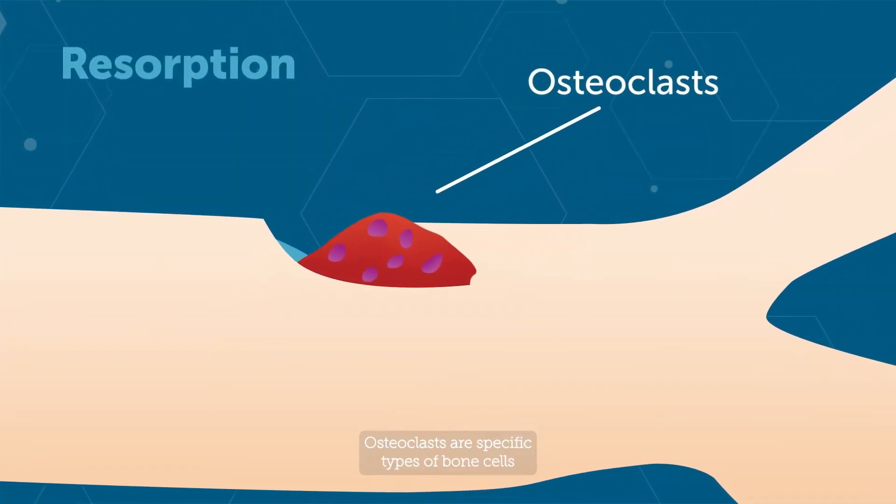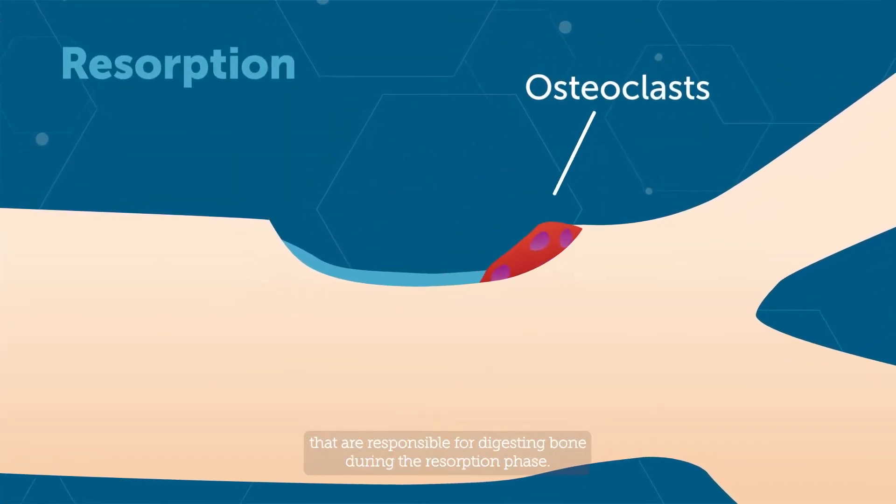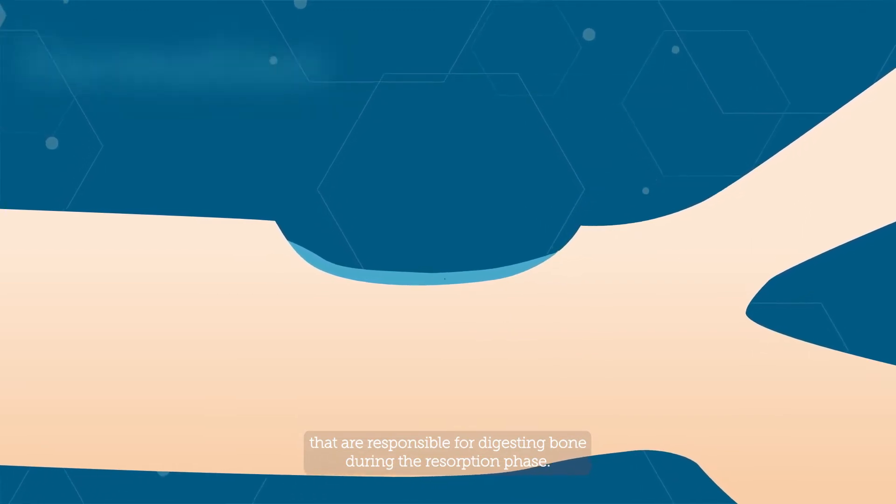Osteoclasts are specific types of bone cells that are responsible for digesting bone during the resorption phase.